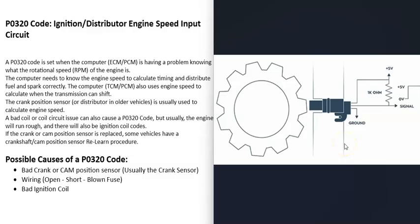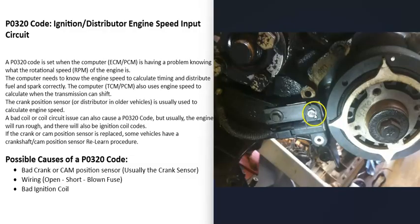In most vehicle computers, they use what's called the crankshaft position sensor to track the timing of the engine. This sensor is located down around the crankshaft and tracks it as it spins. When you get this P0320 code, the computer is not getting this information from the crankshaft position sensor — there's some kind of issue that needs to be troubleshot.